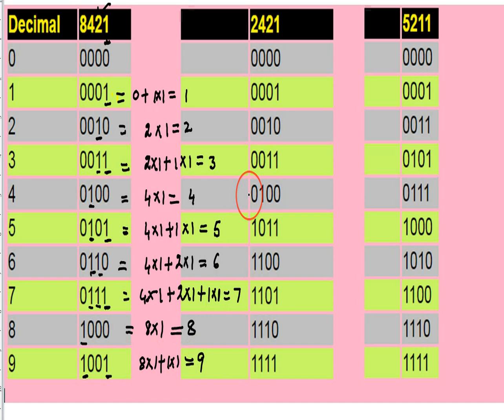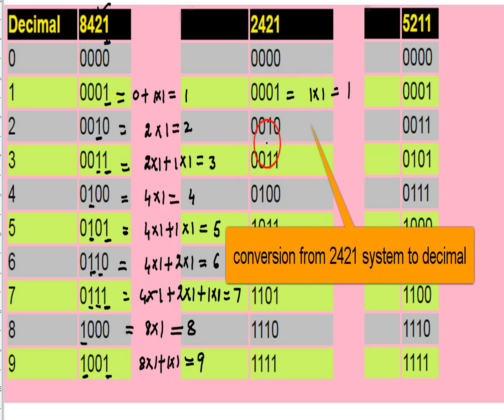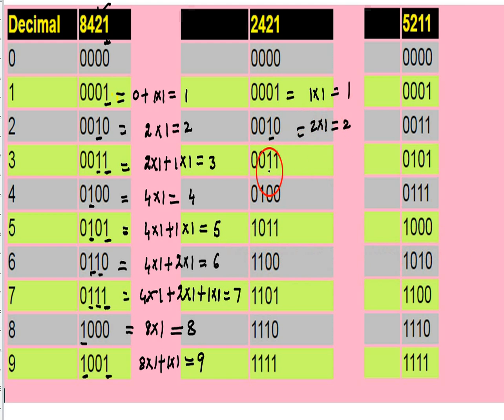Now we are coming to the weighted code 2421. Now, conversion of 2421 to the decimals.